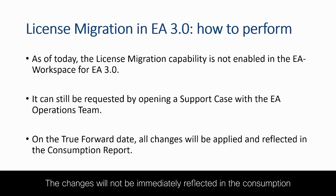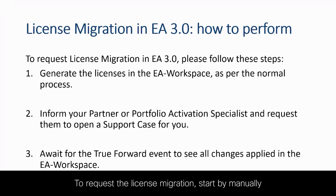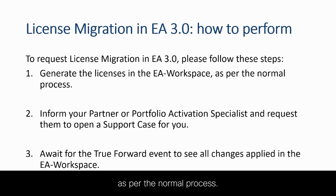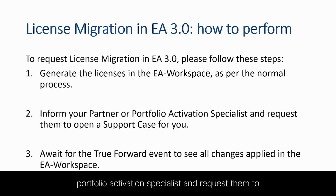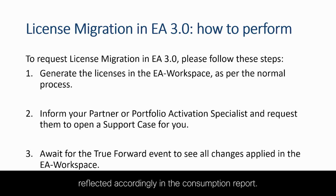The changes will not be immediately reflected in the consumption report — this will only happen on the true forward date. To request the license migration, start by manually generating the target licenses in the EA Workspace as per the normal process. After that, reach out to your partner or to your Cisco Portfolio Activation Specialist and request them to open a case for you to request the license migration. There is no further action required. On the true forward date, the changes will take place and be reflected accordingly in the consumption report.